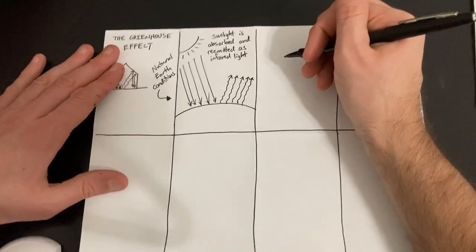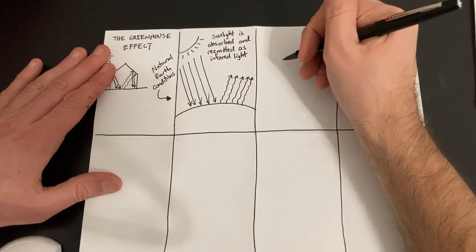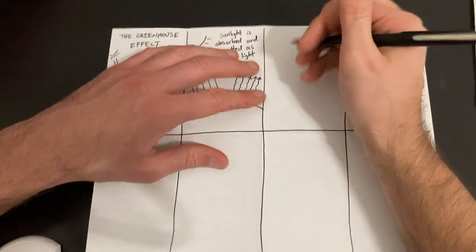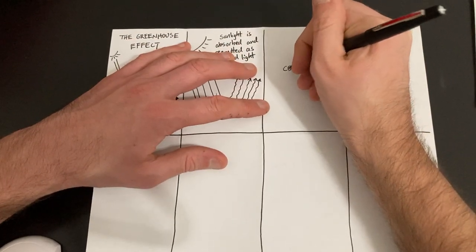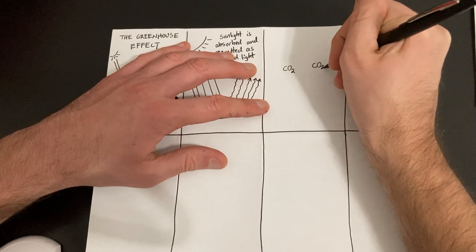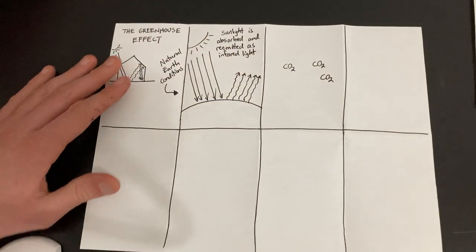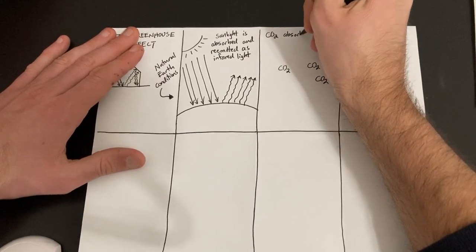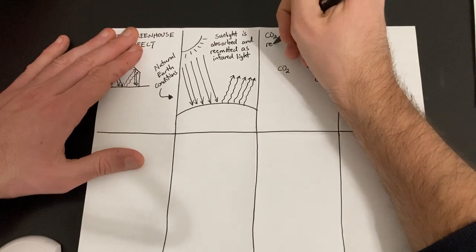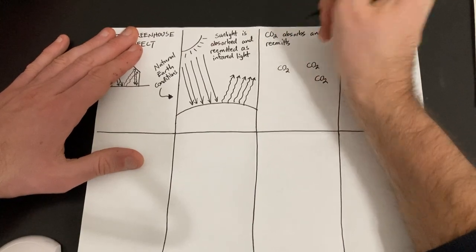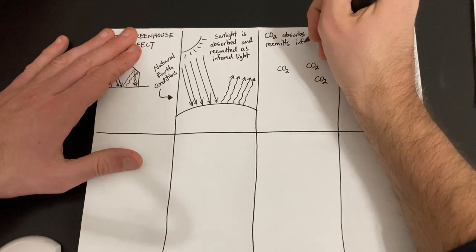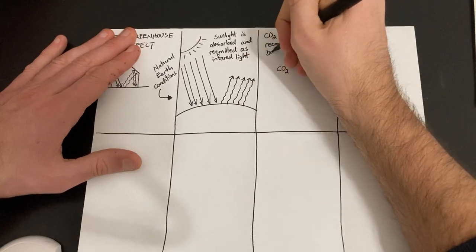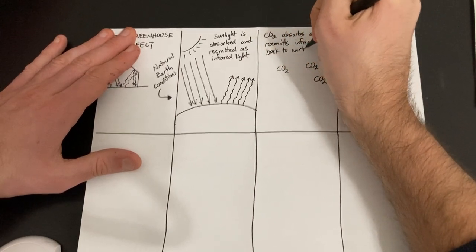So what's going to happen next is we're going to draw in this box some CO2 molecules. So now we're going to be drawing what's happening up here in the atmosphere. So it's almost like we're zooming in right here. So I'm going to draw a CO2 molecule here, a CO2 molecule here, and a CO2 molecule here. Now CO2 absorbs and re-emits infrared light back to Earth. So what do I mean by that? Let's draw a picture.